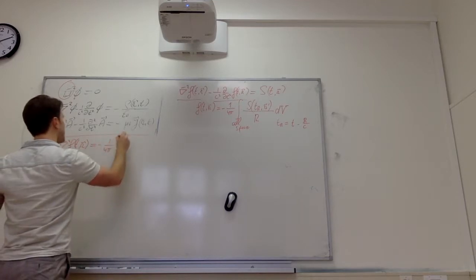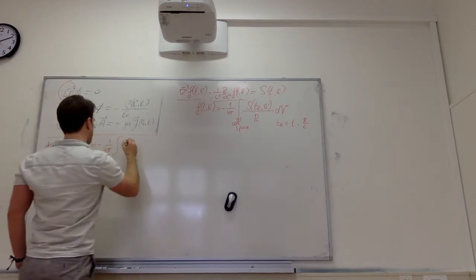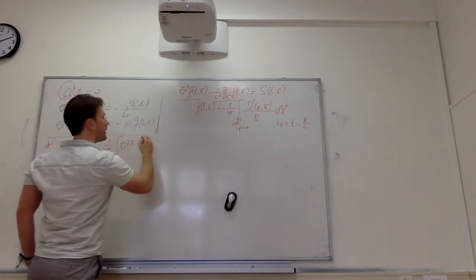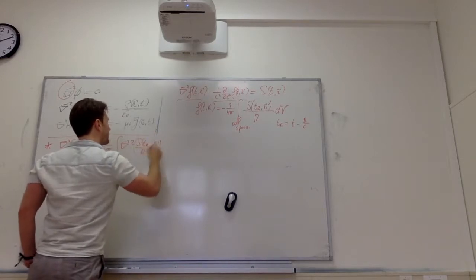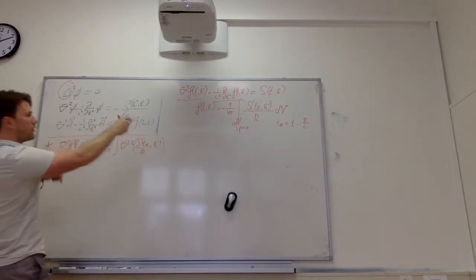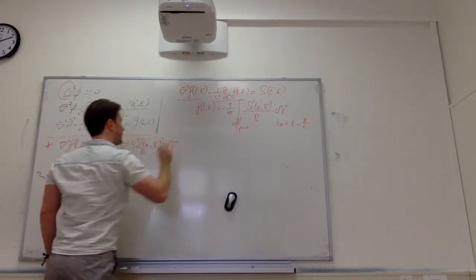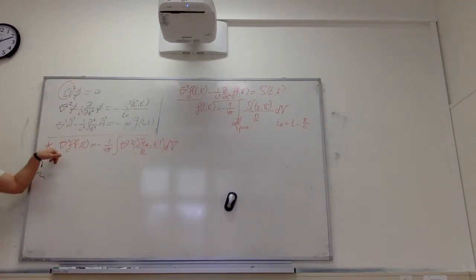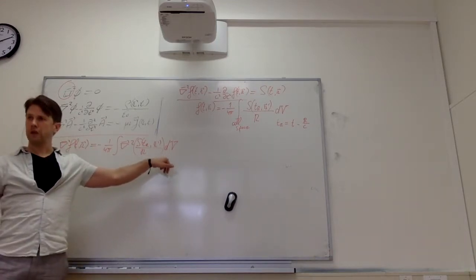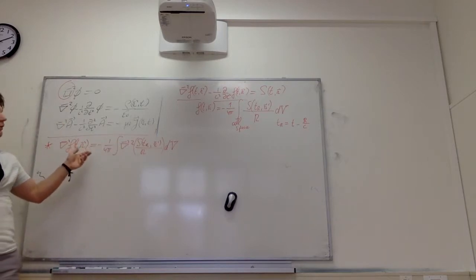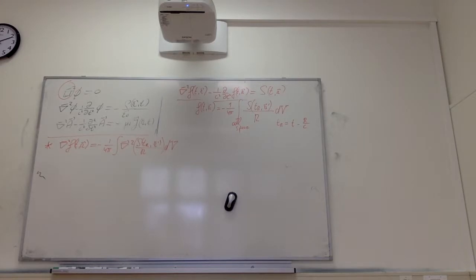We evaluate one over four pi times the integral of the Laplacian of S(t_r, r') over big R with respect to the sweeping coordinates. We can pull the Laplacian inside the integration, because we integrate over the sweeping coordinates while differentiating with respect to the non-sweeping ones — so integration and this particular differentiation can be interchanged.